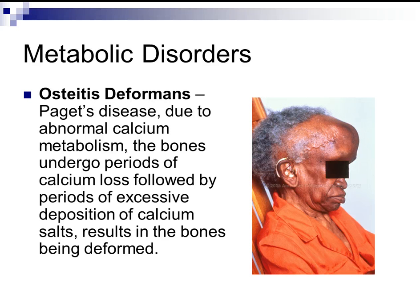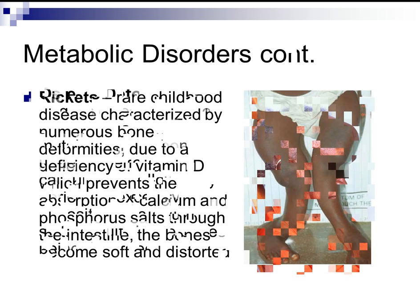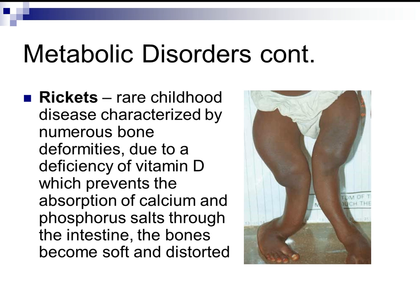Metabolic disorders: Osteitis deformans, also known as Paget's disease, is due to abnormal calcium metabolism. The bones undergo periods of calcium loss followed by excessive calcium salt deposits, resulting in deformed bones. Rickets is a rare childhood disease characterized by bone deformities due to a vitamin D deficiency, which prevents absorption of calcium and phosphorus through the intestines. The bones become soft and distorted, typically seen in malnourished children in countries with poor diets or insufficient sunlight.